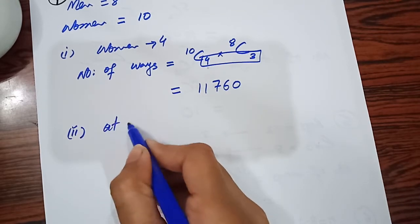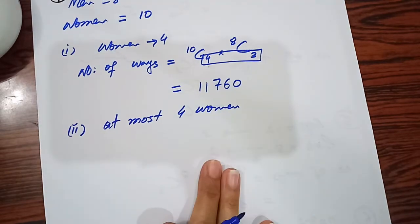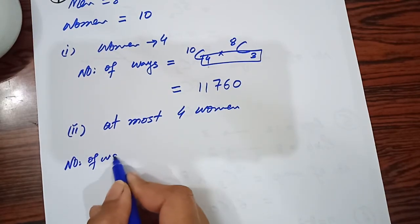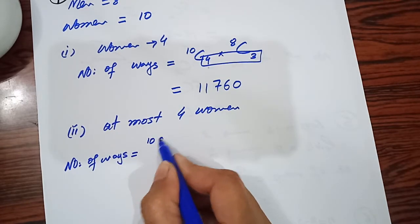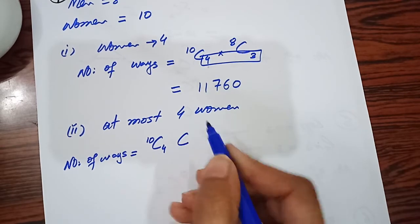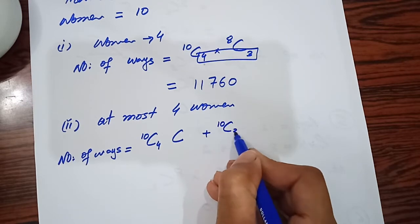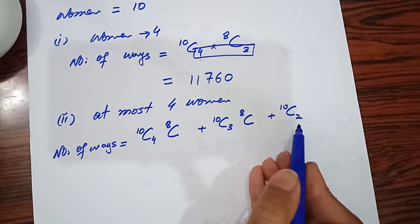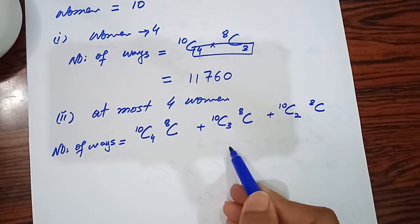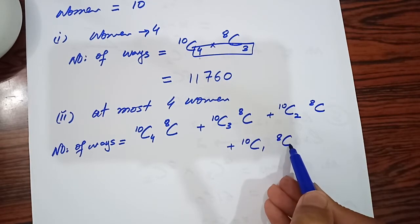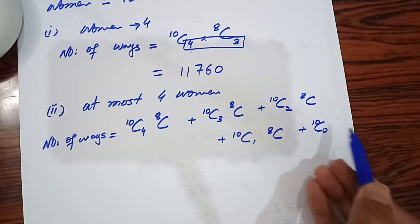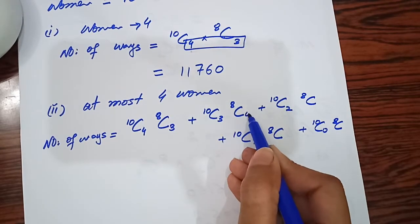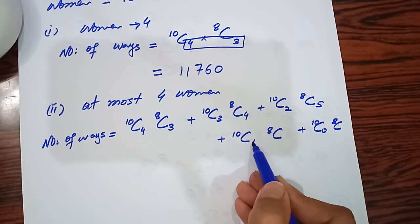At most 4 women - matlab 4 ya 4 se kam women ho sakti hain. Number of ways mein hum consider karenge: 10C4 into 8C3, plus 10C3 into 8C4, plus 10C2 into 8C5, plus 10C1 into 8C6, plus 10C0 into 8C7. Total members on committee = 7.